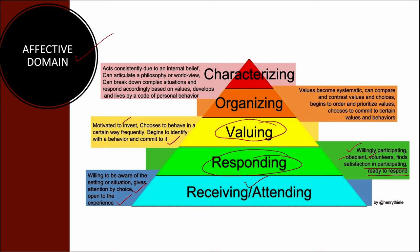As we climb further, we reach organizing — where values become systematic. We compare and contrast values and choices, begin to order and prioritize values, and choose to commit to certain values and behavior. Finally, we reach the top of the affective domain — characterizing. What we call creating in the cognitive domain is called characterizing in the affective domain. It is acting consistently due to an internal belief, can articulate a philosophy or worldview, and develops and lives by a code of personal behavior.